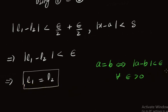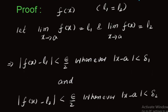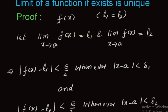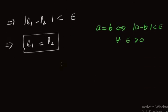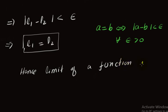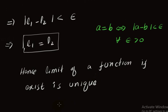We have proved that the limits l₁ and l₂ are actually the same. So when the limit of a function exists, it is unique. Hence, the limit of a function, if it exists, is unique, which completes the proof of our theorem. Thank you very much for watching this video lecture.